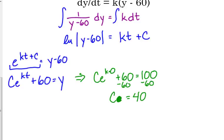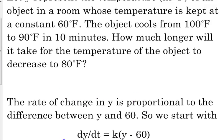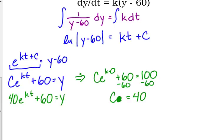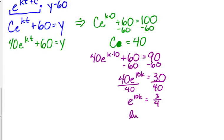We need to find our K. So we've got 40E to the KT plus 60 is equal to Y. We use the other piece of information. It's 90 degrees Fahrenheit after 10 minutes. So 40E to the K times 10 plus 60 is equal to 90. Solve for K. Subtract 60 from both sides. Divide by 40. Take the natural log. And divide by 10. There is our K.